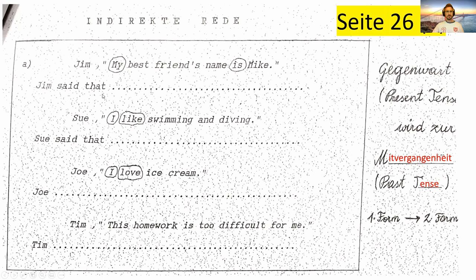So, was glaubt ihr, was wird jetzt da draus? Jim sagte, dass sein bester Freund — also der Name seines besten Freundes — Mike war. Also, 'is' wird zu zweiter Form von 'is'. Hier steht dann: his best friend's name was Mike. Ich möchte auch, dass du das 'is' farbig markierst und das 'was' natürlich auch farbig markierst bei dir auf dem Zettel. Aus dem 'my' wird ein 'his'.